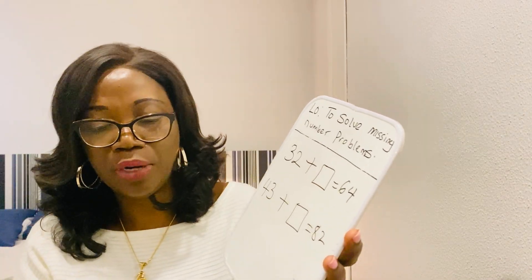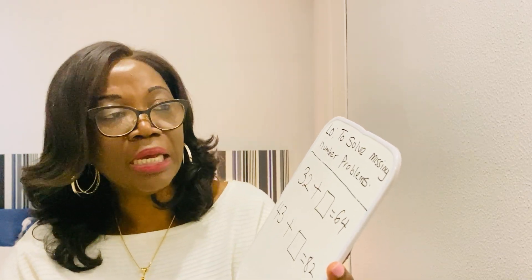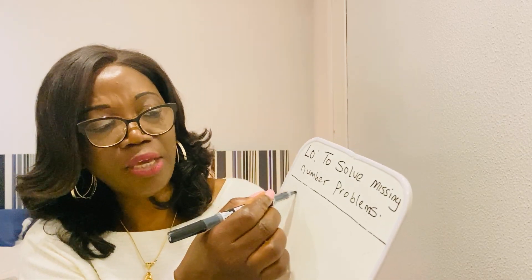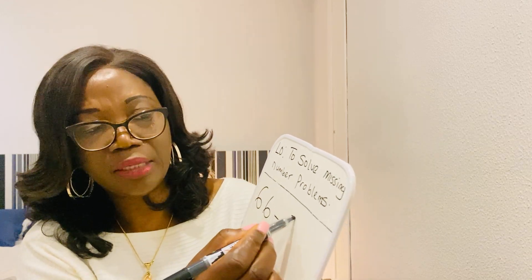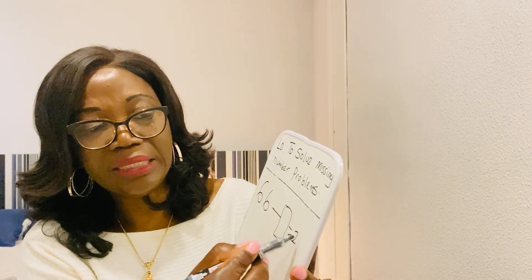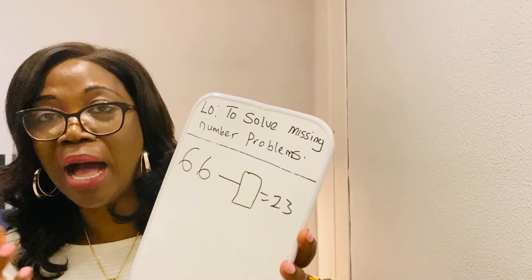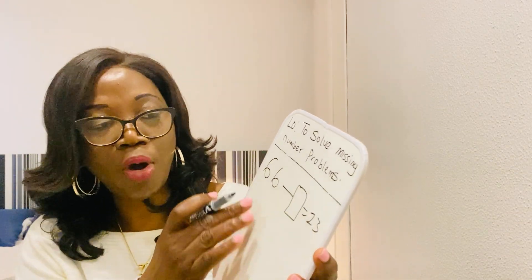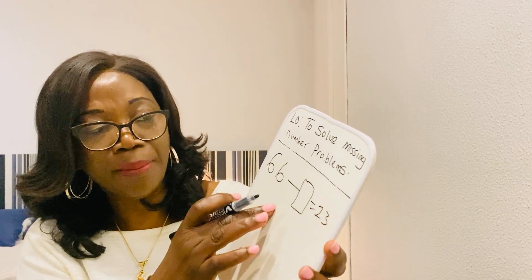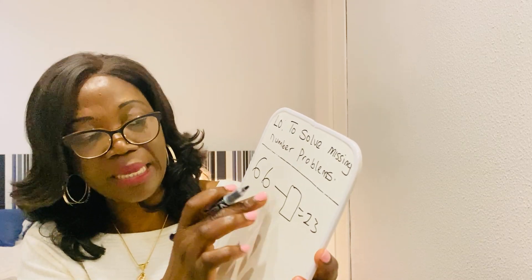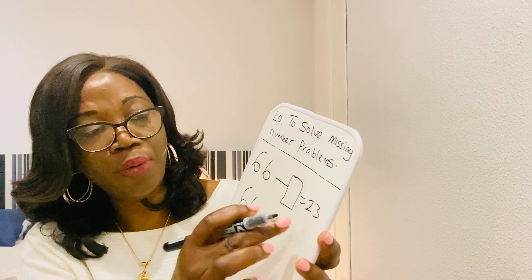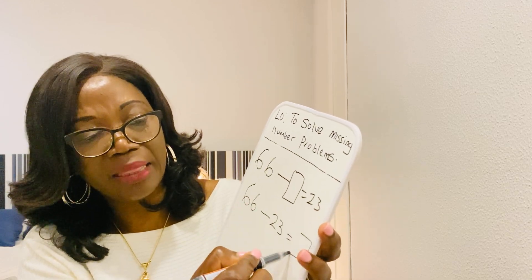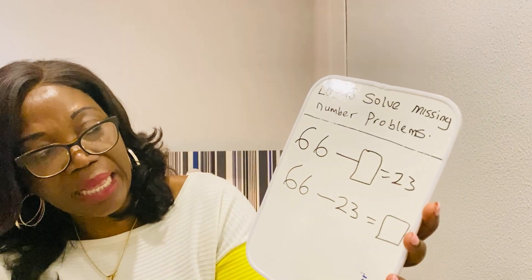We're going to do the addition type — or let me actually show you quickly how to do that one. We're still solving the missing number problem. So let's say you have a question like this: 66 take away something equals 23. Some of us are really not sure how to do this. But remember, we don't need to swap the numbers here. You just write the number. You don't need to change the sign — you just keep it like that. 66 take away this number — you just swap the number and the equals, and the blank will be at the back.